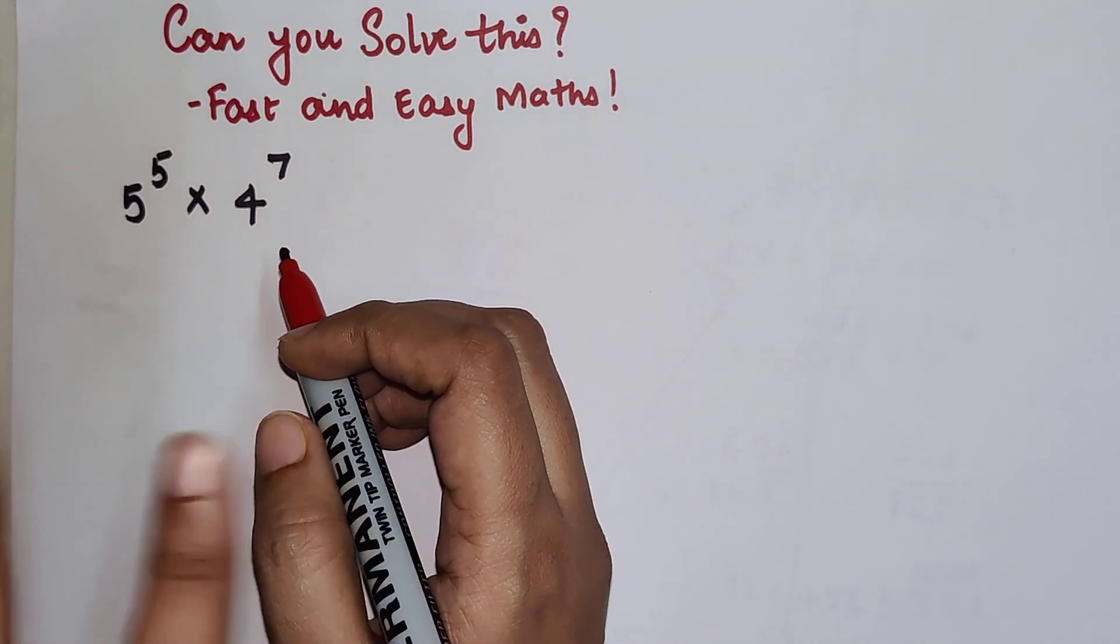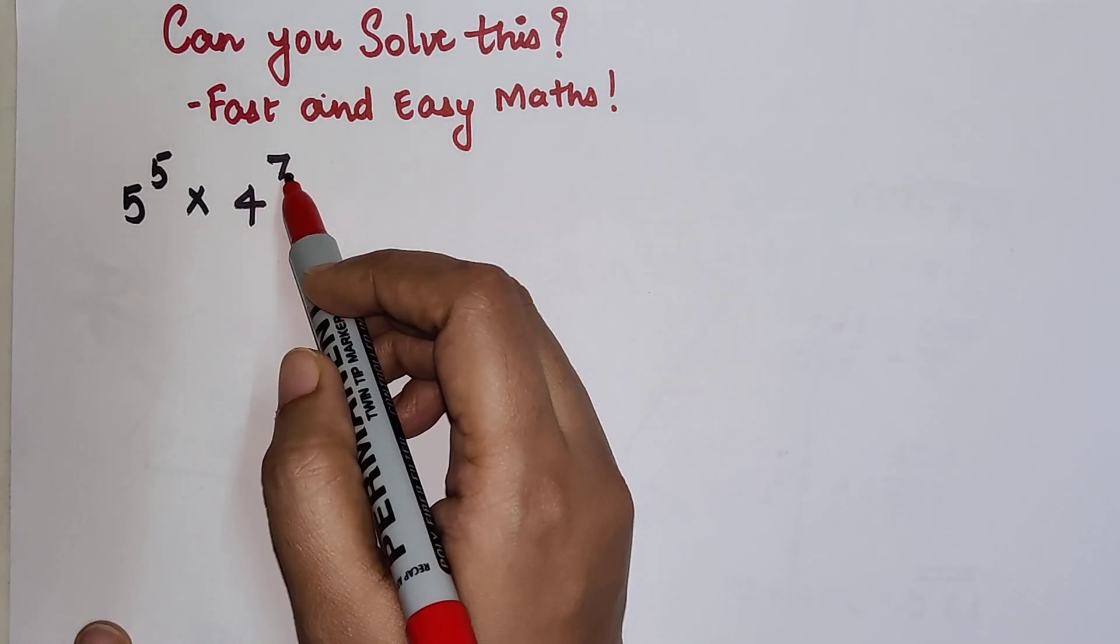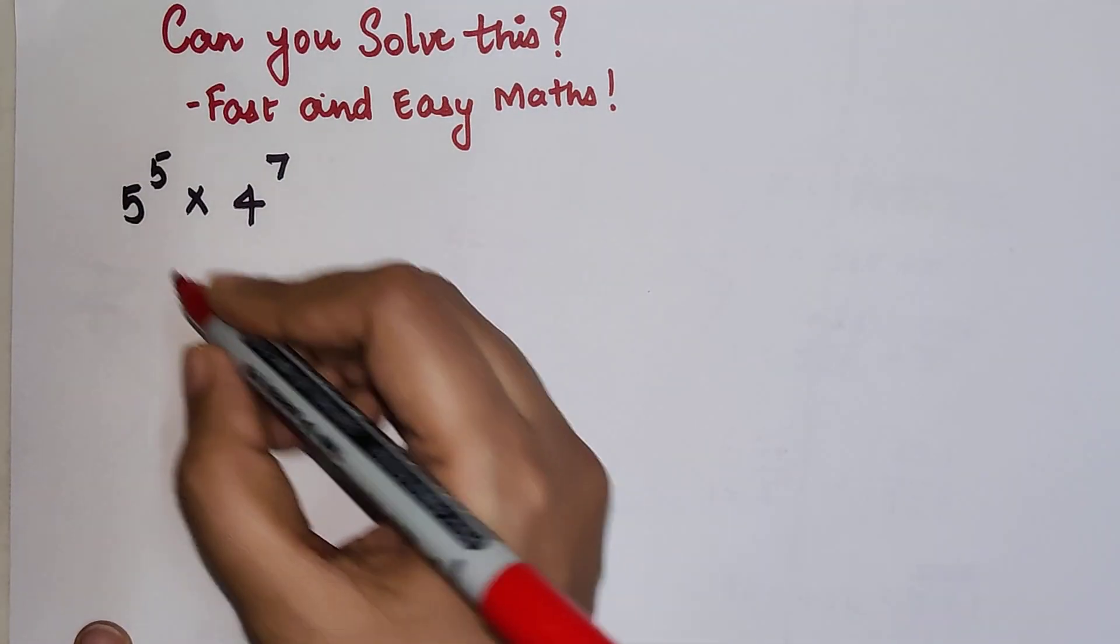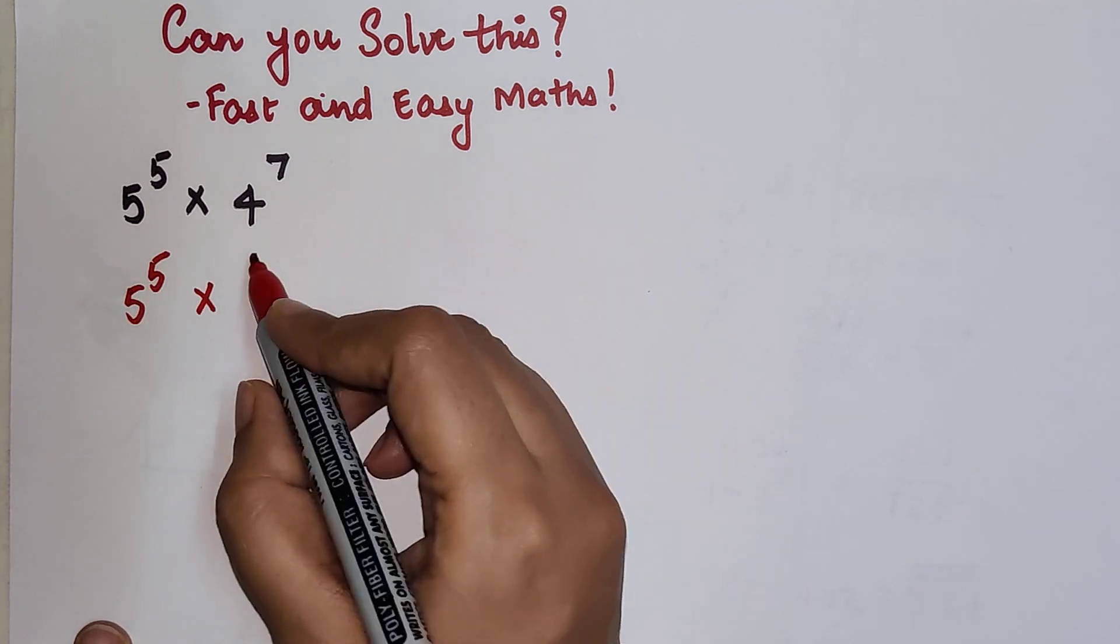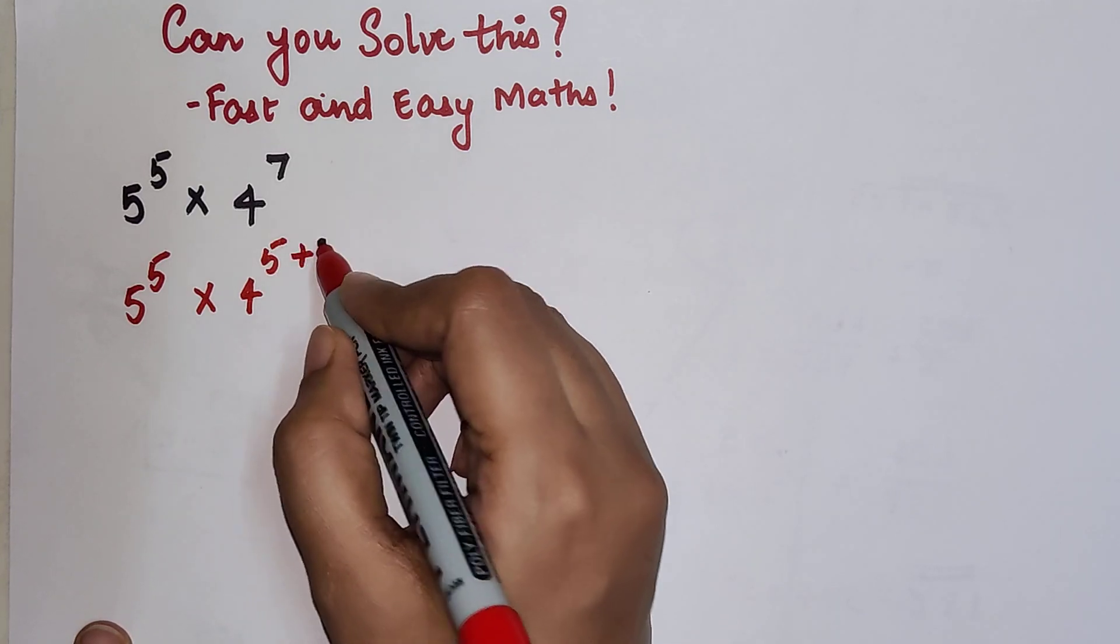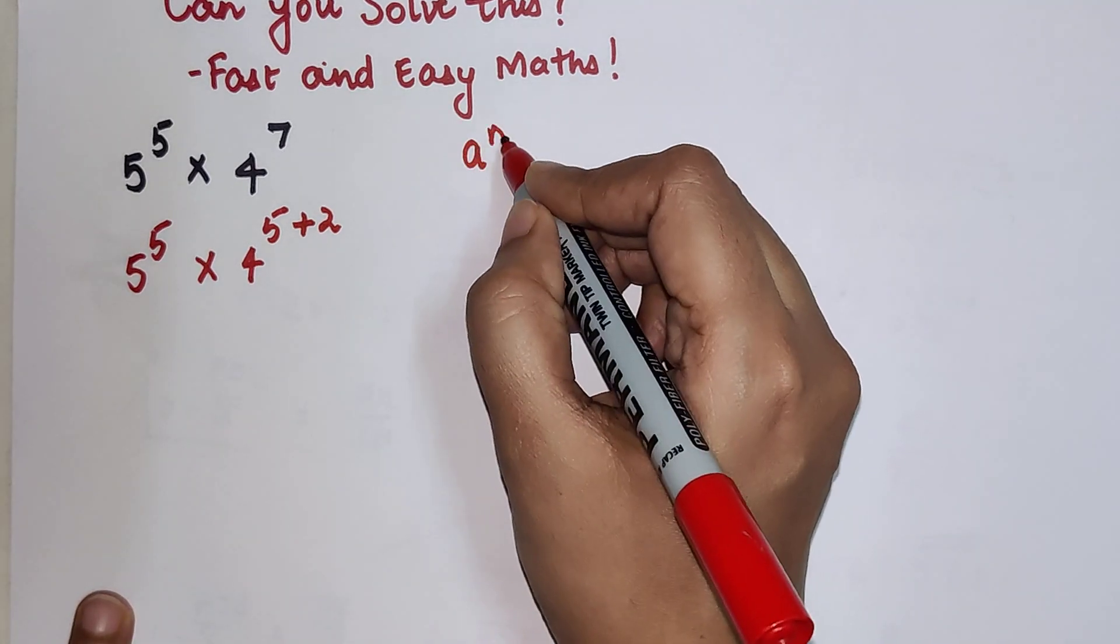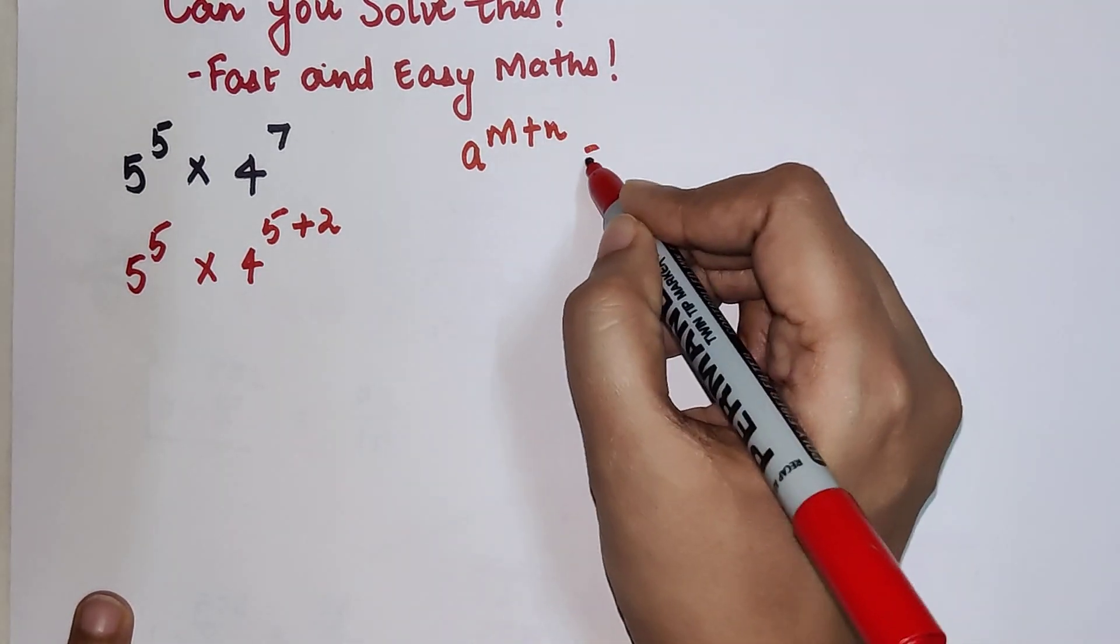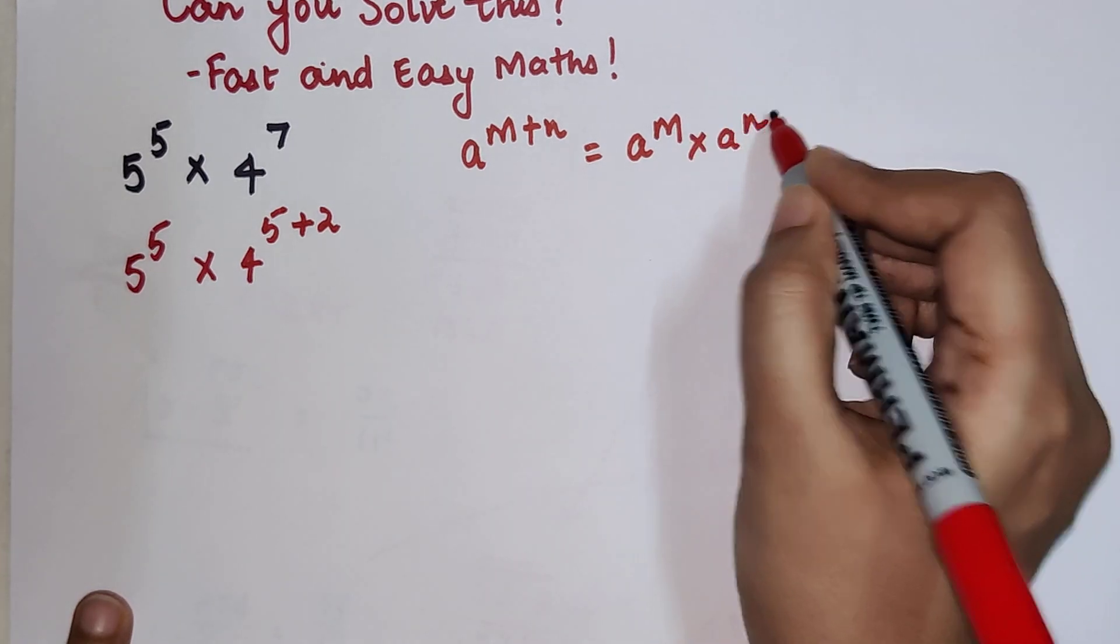The first thing which we should know is that we can make this 4 raise to 7 as 4 raise to 5 plus 2. Now we know that a raise to m plus n is nothing but a raise to m into a raise to n.